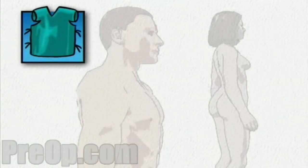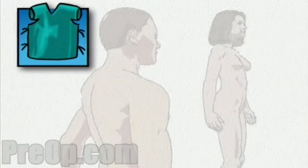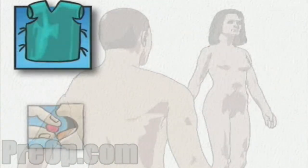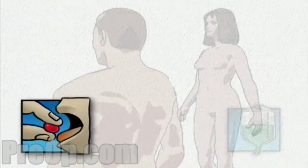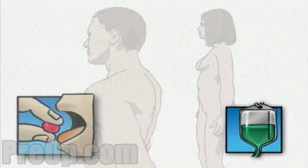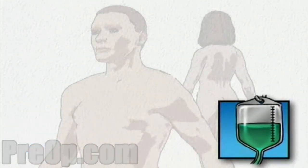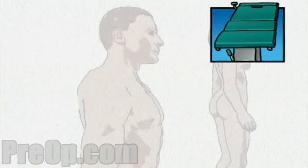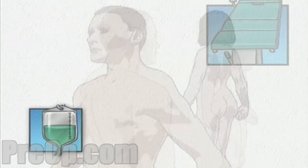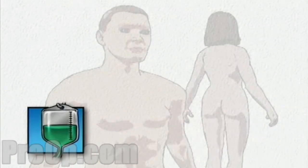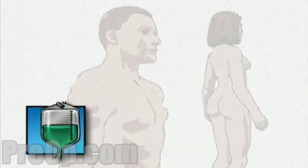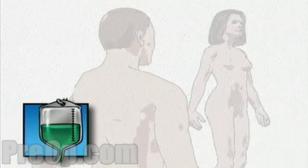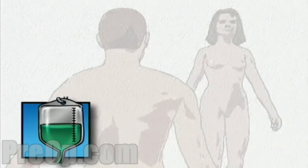On the day of your operation, you will be asked to put on a surgical gown. You may receive a sedative by mouth, and an intravenous line may be put in. You will then be transferred to the operating table. In the operating room, the anesthesiologist will begin to administer anesthesia, most probably general anesthesia.